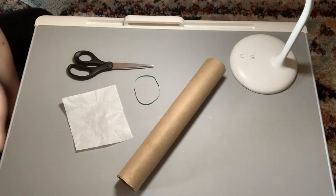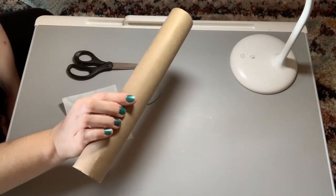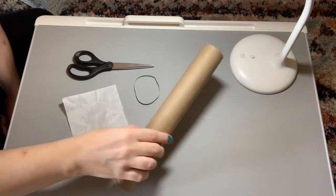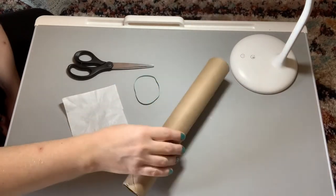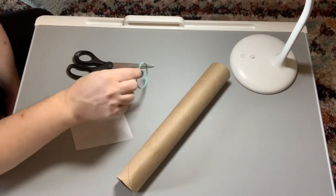Okay, here's what you need to make your kazoo. You need a cardboard roll tube, either paper towel or toilet paper works well, and a rubber band.